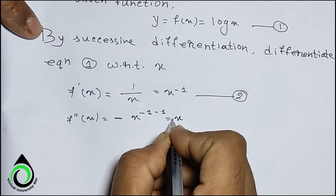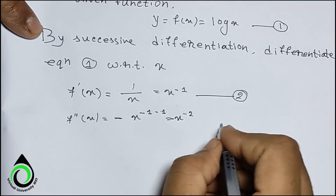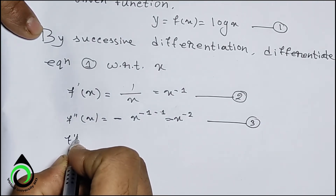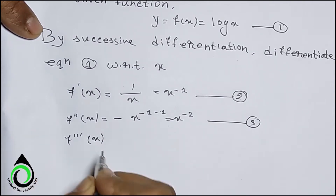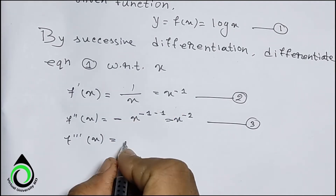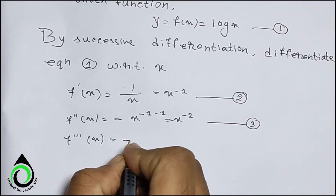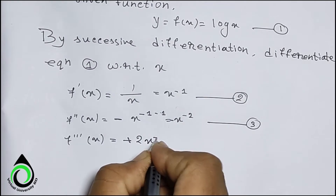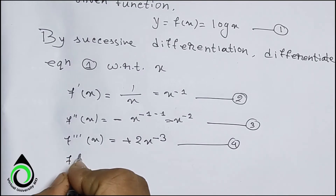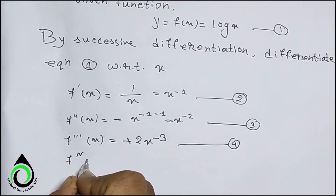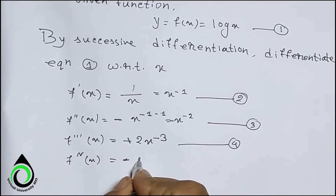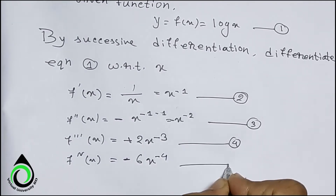This is equation 3. Differentiating once more, f'''(x) = 2x⁻³. This is equation 4. Differentiating again, f''''(x) = −6x⁻⁴. This is equation 5, and so on.